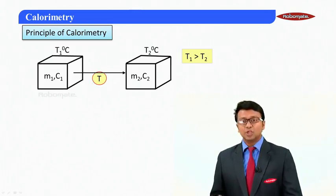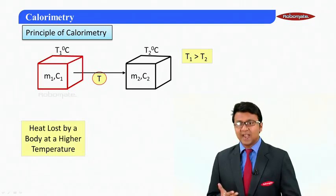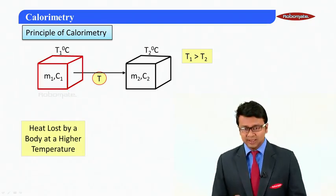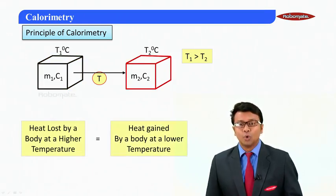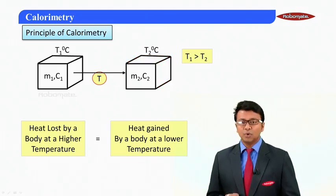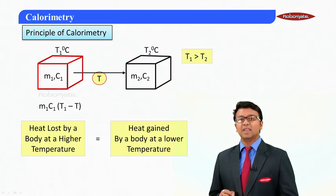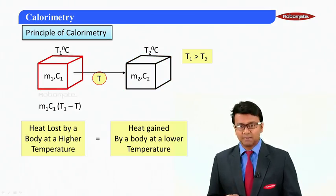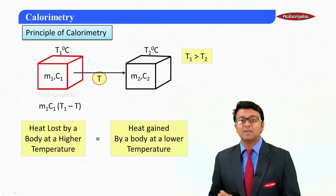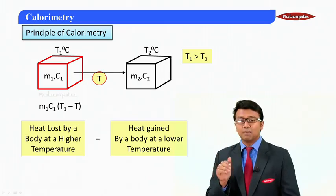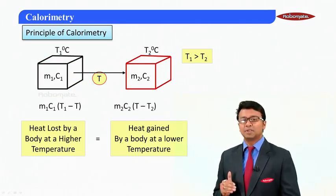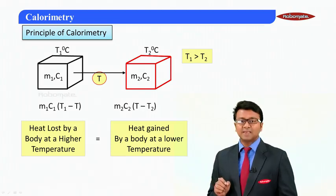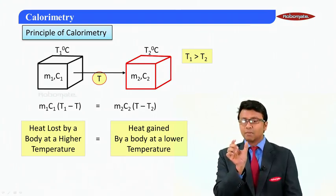So the principle of calorimetry states that heat lost by a body at a higher temperature is equal to the heat gained by the body at a lower temperature. So what is the amount of heat lost by the body at a higher temperature? It is m₁C₁(T₁ - T), that is the temperature difference for the body at a higher temperature. And what is the heat gained by a body at a lower temperature? It is m₂C₂(T - T₂). Now equating them, this is what is the most important principle that we are learning in this particular module.